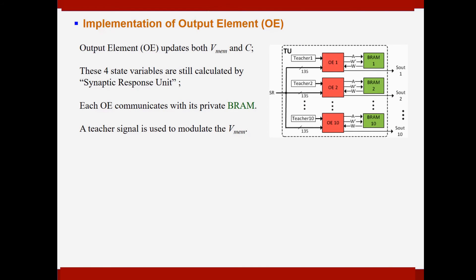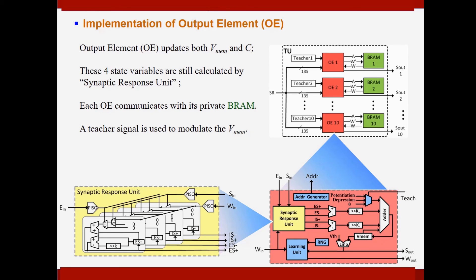As mentioned earlier, the output neuron is realized by the output element, which update both the membrane potential and the calcium concentration. And the four state variables are still calculated by the similar synaptic response unit. However, this time, each output neuron needs to communicate with its private BRAM in order to train the neural network, namely to update the synaptic weight. And also a teacher signal is needed here to modulate the membrane potential of each output neuron.